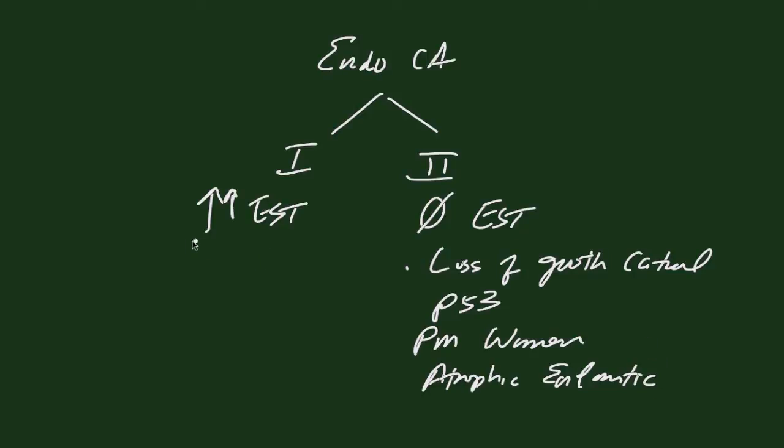On the type 1 cancers, which are characterized by too much estrogen, these can occur in premenopausal women or postmenopausal women. The key thing is to understand where the sources of estrogen are coming from in the type 1 cancers and precancers, as opposed to type 2, which happen spontaneously. So let's first talk about the type 1 cancers and their precancerous lesions, also known as hyperplasia.